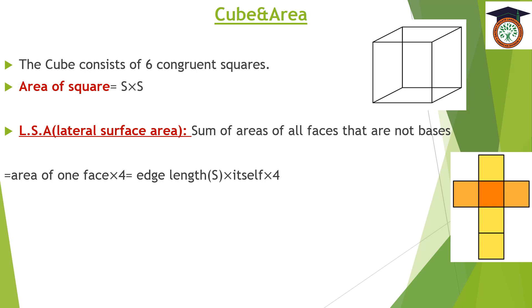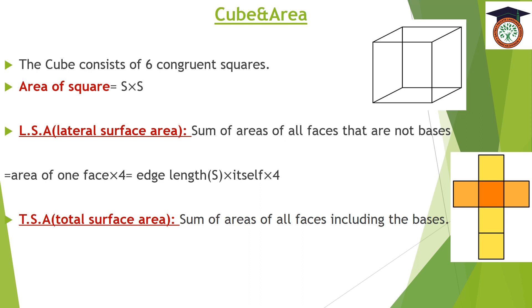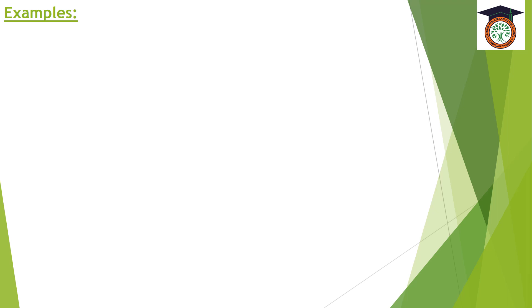The lateral surface area equals the area of one face times 4, which equals the edge length s times itself times 4. After that we move to the total surface area, or TSA. It is the sum of areas of all faces including the bases, which equals the area of one face times 6, which equals edge length s times itself times 6.